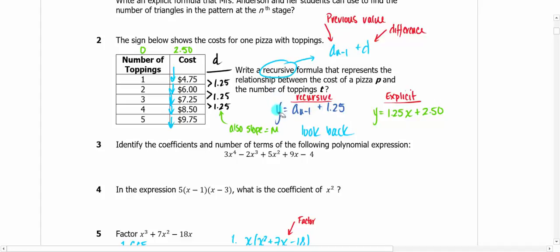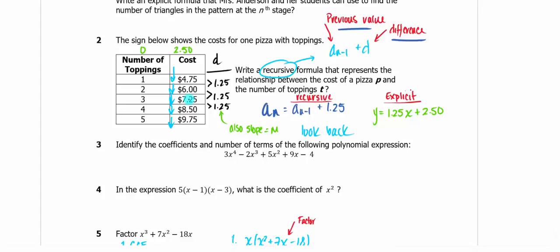Whatever value a sub n you're looking for, you have to look at the previous value and add the difference. For this particular function, the difference happened to be 125 — that's coincidental, it does not have to be linear. If I wanted to find term 3, I'd look back at term 2, take $6 and add $1.25. Recursive is limited: you can only go as far as the last term you have. To find the 200th term, you'd have to go out to 199 — a lot of work.